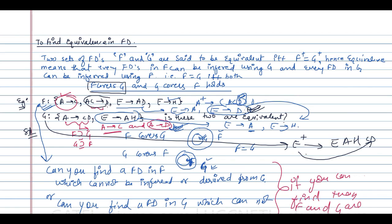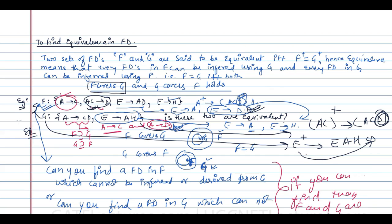The only remaining dependency is AC→D, which is in F but not directly in G. Take AC-closure in G: it contains A, C, D. Since D is present, AC→D is also covered in G. There is nothing present in F but not in G, and nothing in G but not in F, therefore F and G are equivalent.